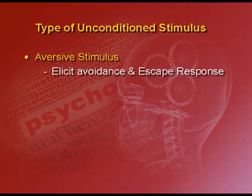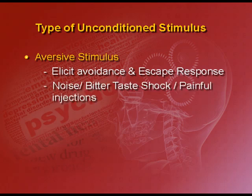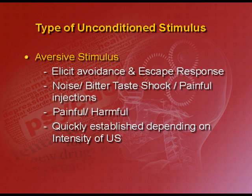The second type of US are aversive stimuli, which elicit avoidance or escape responses — for instance, loud noise, bitter taste, shock or painful injections. These are painful or harmful and help in quickly establishing classical conditioning. The Pavlovian experiment uses a pleasure stimulus, food, which results in extinction of hunger — an example of an appetitive unconditioned stimulus. In your life, whenever you do some good deed, praise is given to you; your teacher smiles or your mother pats your back. Your good work is associated with praiseworthy reactions, and gradually, to get that praise, you learn to perform good deeds. This is classical conditioning using appetitive unconditioned stimuli.